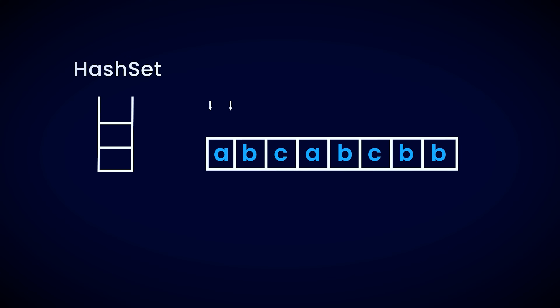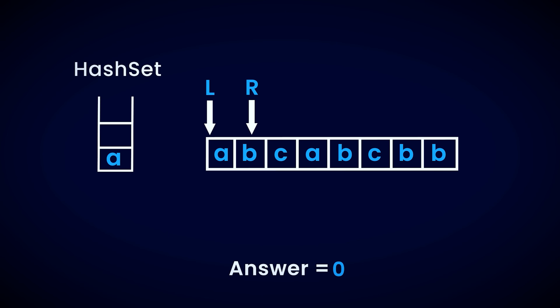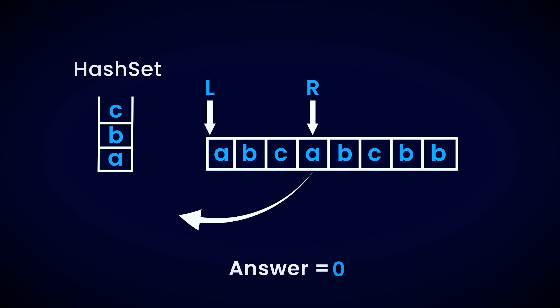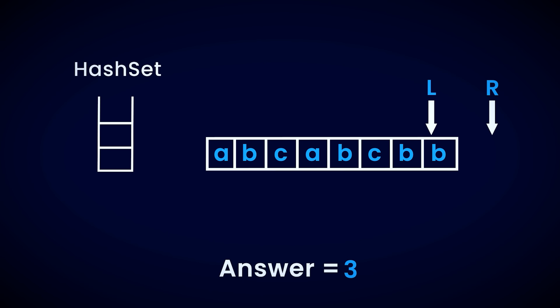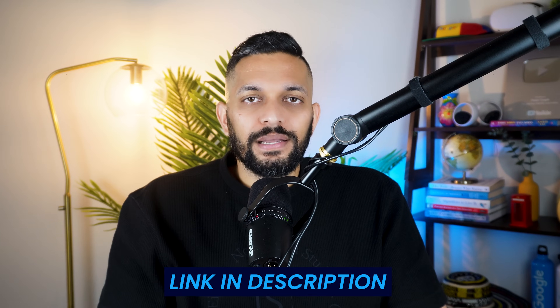In the first step, we initialize two pointers, left and right, at the beginning of the array. We increment the right pointer to expand the window between left and right. As we do this, we store the information of all the characters present inside the window. We keep incrementing the right pointer and updating this information until we find a character that is already present in the window. We've reached the maximum window size, so we update the answer. Then we start shrinking the window by incrementing the left pointer until the repeating character goes outside the window, removing characters no longer in the window from the stored information. Once done, we expand the right pointer again and repeat until the right pointer goes outside the array. A link to the code will be in the description.